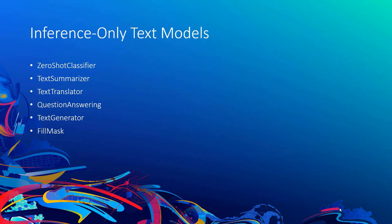Next are the inference-only models. The arcgis.learn.text submodule provides six inference-only text models: ZeroShot Classifier, Text Summarizer, Text Translator, Question Answering, Text Generator, and Fill Mask. These models differ in that they do not need to be trained on a given dataset before inferencing, and therefore do not have methods like lr_find and fit.